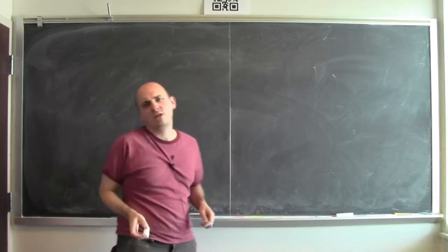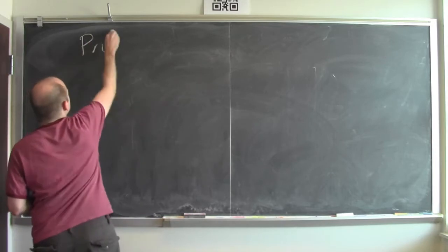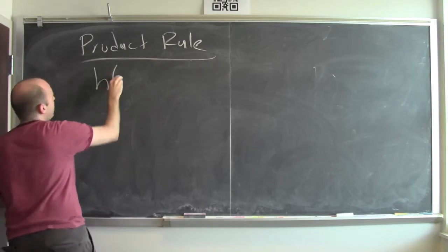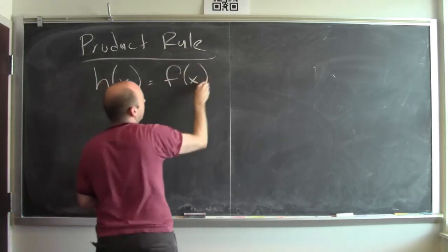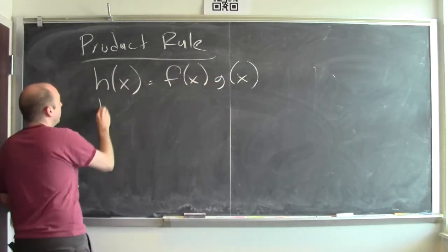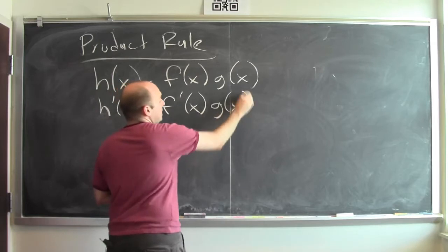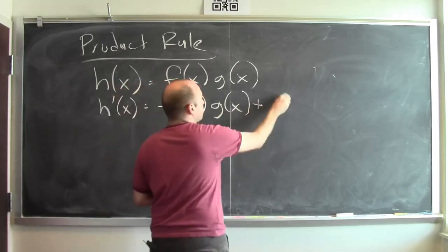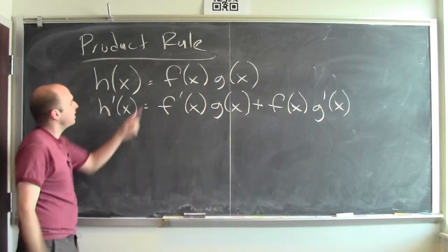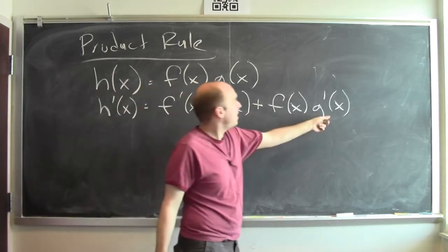The product rule tells you how to differentiate a product of two functions. If you have a function h which is the product of f and g, the derivative of h is the derivative of f times g, plus f times the derivative of g. This is what the product rule tells you: the derivative of the first times the second, plus the first times the derivative of the second.